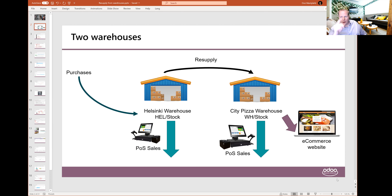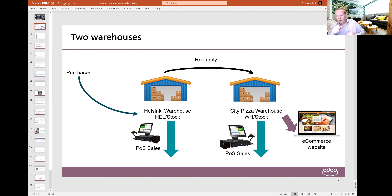However, we are also having one e-commerce website, and in Odoo's case the e-commerce website for one company can only be connected to one site. So we are buying from Helsinki, and then we are selling from City Pizza.